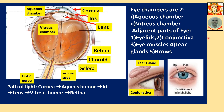Eye chambers are two. The lens divides the whole eyeball into anterior chamber (aqueous chamber) and posterior chamber (vitreous chamber). Aqueous humor is thin; vitreous humor is thick.